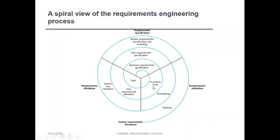In requirement specification, the customer provides business requirements from which user and system requirements are identified. Feasibility is validated — whether it is financially viable and whether the product can be designed with existing technology. If feasible, the process starts; if problems occur they are rectified. Requirement validation tests data according to customer requirements to verify the output, and the product with proper documentation is handed over to the next team.